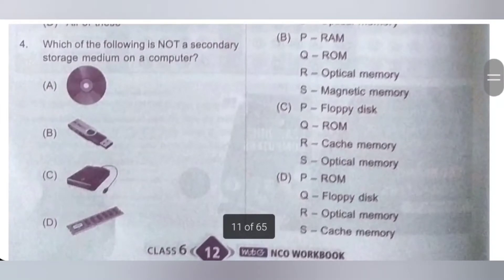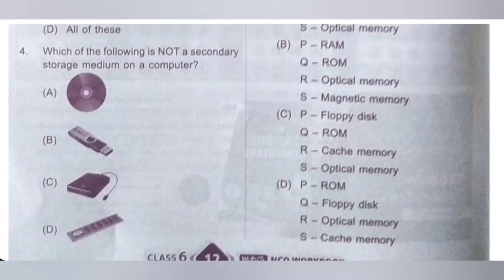Fourth question. Which of these is not a secondary storage medium on a computer? A) CD; B) pen drive; C) external hard disk; D) RAM. We know RAM is not a secondary storage medium on a computer — RAM is a primary memory of a computer. So option D is the correct answer.